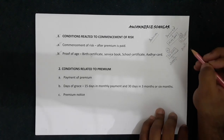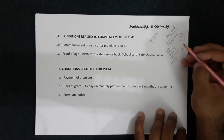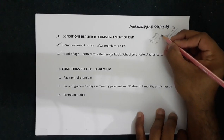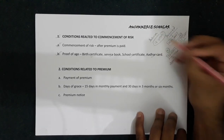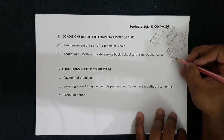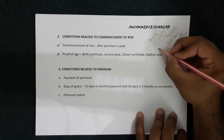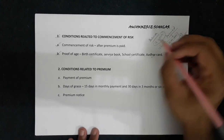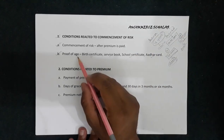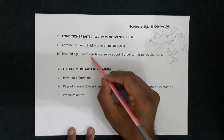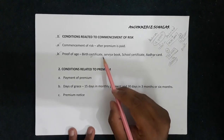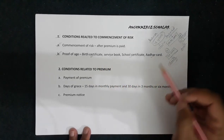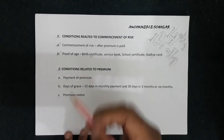In the insurance business, those who are younger have to pay comparatively less premium than those who are older. The minimum legal age is 18 years. If someone takes this policy at 18 years of age, they may have to pay only 1200 rupees instead of 2000. So age is a very important factor, and the company carefully verifies age proof through birth certificate, service book, school certificate, or Aadhaar card.